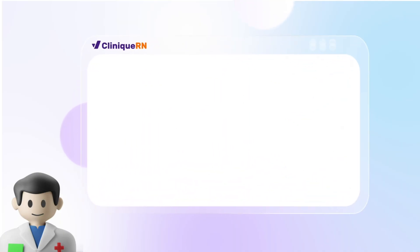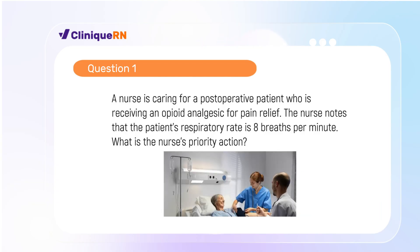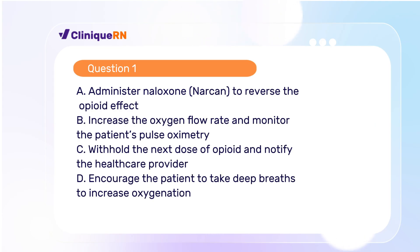Question one. A nurse is caring for a post-operative patient who is receiving an opioid analgesic for pain relief. The nurse notes that the patient's respiratory rate is eight breaths per minute. What is the nurse's priority action? A. Administer naloxone (Narcan) to reverse the opioid effect. B. Increase the oxygen flow rate and monitor the patient's pulse oximetry. C. Withhold the next dose of opioid and notify the healthcare provider. D. Encourage the patient to take deep breaths to increase oxygenation.